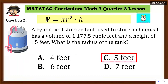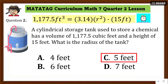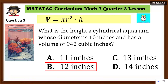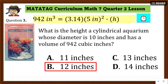Let's check your answer — the answer is letter C: 5 feet. Remember, what we're looking for there is the radius. Substitute the volume and the height into the formula, just like what we did in the given example. Let's have number 3 — use the formula. Ready? Your answer is correct — letter B: 12 inches. What we're looking for there is the height. Substitute the volume and the radius into the formula. The answer is 12 inches.